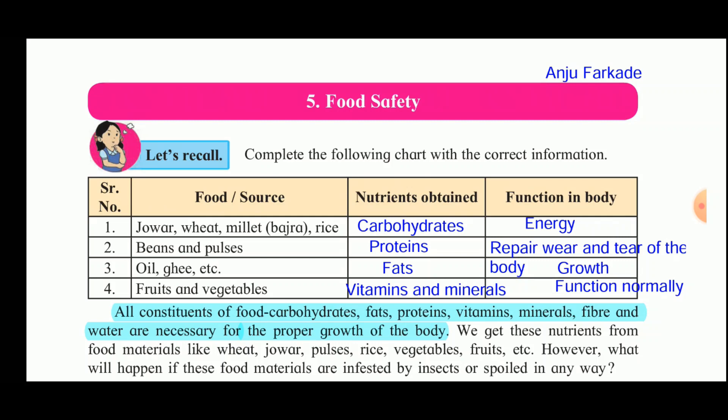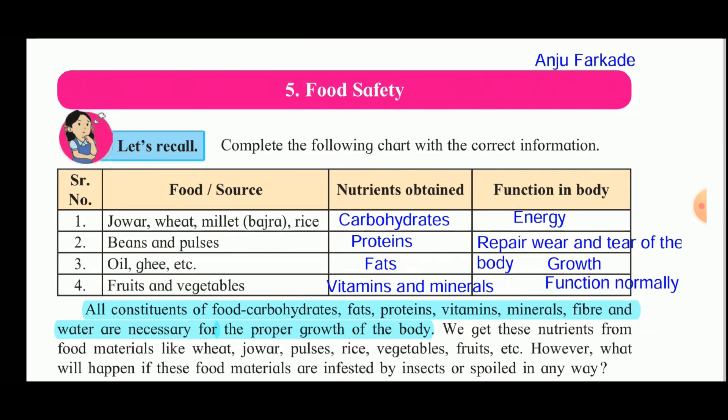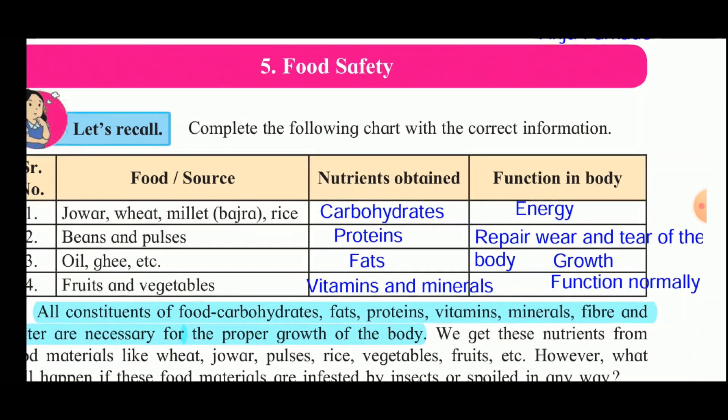With the help of that knowledge, we can complete the table given here. This table consists of three columns: the first column is for the food or the source, the second column is the nutrient or the constituent obtained from that food, and the third column is the function of that nutrient in the body. Jowar, wheat, millet, and rice — the main constituent in these foods is carbohydrates.